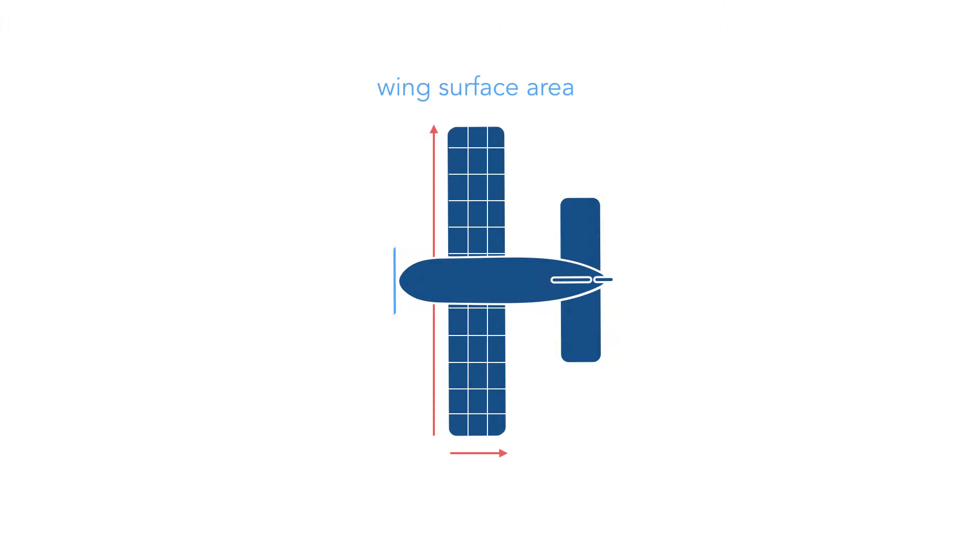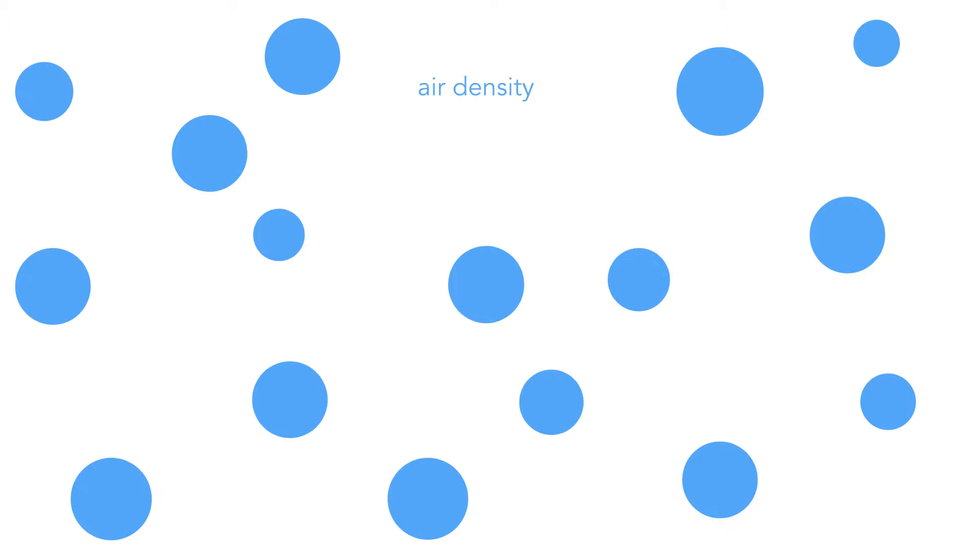The projected area of the wing is called the wing surface area. The mass of air molecules within a specific volume is called the air density. For example, more molecules equals higher air density.